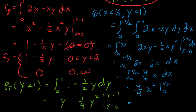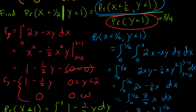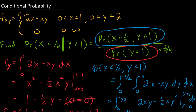Now integrating 3 halves x over x from 0 to 1 half gives 3 fourths x squared, evaluated from 0 to 1 half. Plugging in those bounds: 3 fourths times 1 fourth, minus 3 fourths times 0, which goes away. Don't always assume your lower bound is 0 — plug it in and make sure it actually goes away. In this case it does, so we're left with 3 sixteenths. So the numerator — the probability that x is less than 1 half and y is less than 1 — is 3 sixteenths.